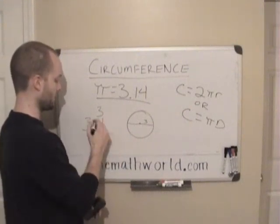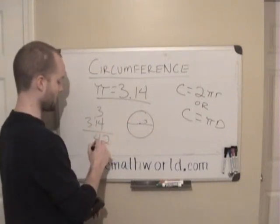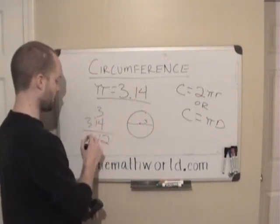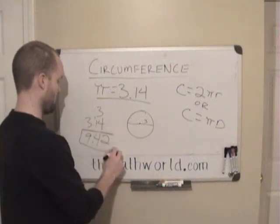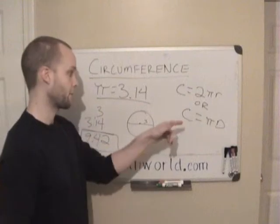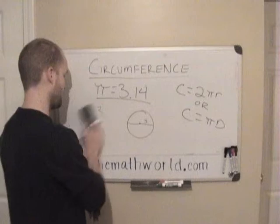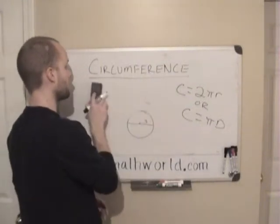I can actually multiply this one out. 3 times 4 is 12, write my 2, carry my 1. 3 times 1 is 3, plus the 1 we carried is 4. Then 3 times 3 is 9. So in this case, the circumference of a circle with a diameter of 3 is 9.42, and this is how you use circumference.